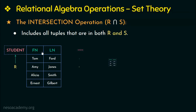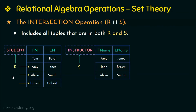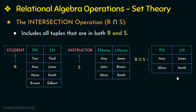Here I'm taking the same student and instructor relations. Since we have already seen they are union compatible, let us see the result of student intersection instructor, or R intersection S. The first tuple from the student relation is not present in the instructor relation, so it won't be displayed. Amy Jones is present in both, so it will be displayed. The third tuple is also present in the instructor relation, so it is displayed too. The last tuple Ernest Gilbert is not in the instructor relation, so it is not displayed. Duplicate tuples are eliminated, and that is all about the intersection operation.